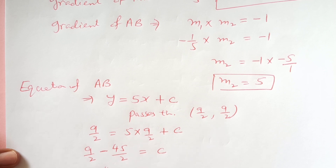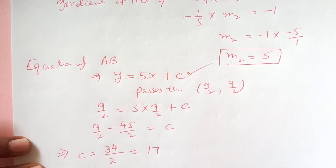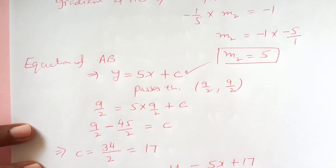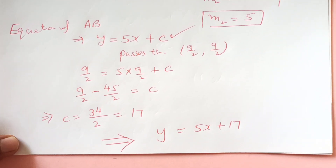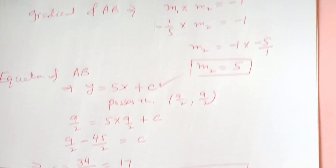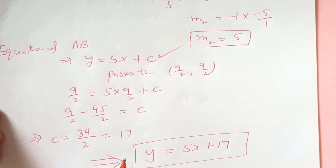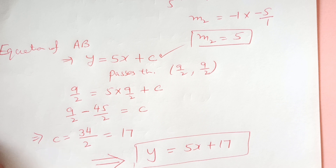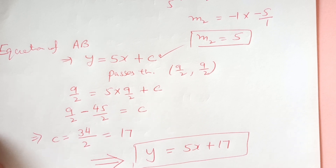So we got the value of c. The equation of AB is y = 5x - 18. This is how you find the equation of a perpendicular bisector when given two points. We will do more examples in the next lesson. Thanks for watching, see you in the next video.